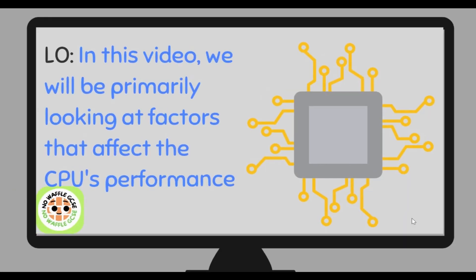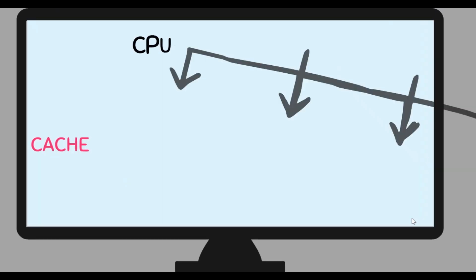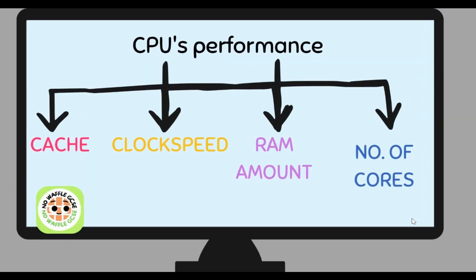The learning objective in this video — we will be primarily looking at factors that affect the CPU's performance. These are the four things that affect the CPU's performance: cache, clock speed, RAM amount, and the number of cores. Let's look at them first.